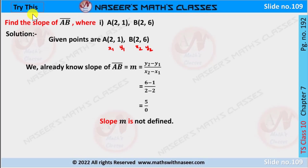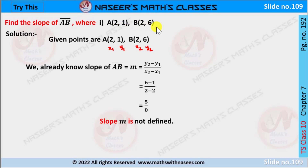Now we are going to solve. Try this: page number 192, chapter 7, coordinate geometry. Find the slope of AB where A is (2, 1) and B is (2, 6).